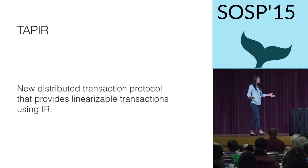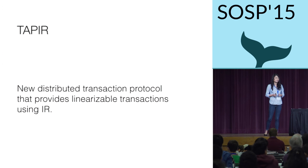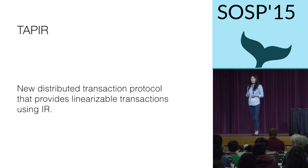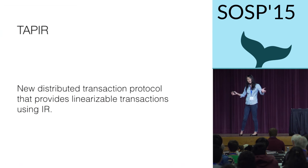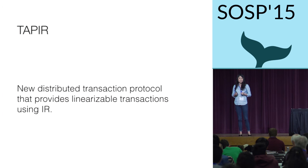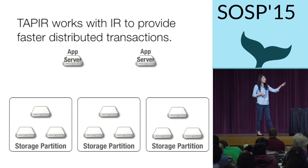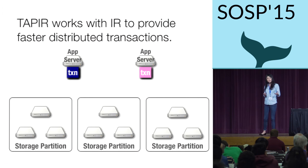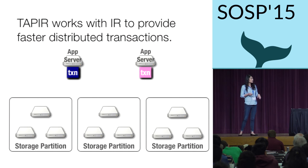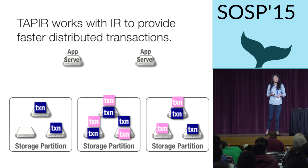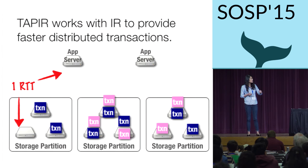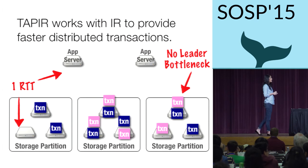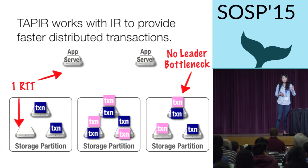TAPIR is a new coordination protocol designed explicitly to work with IR's unordered operations. It provides the same linearizable transaction ordering you get from strong transaction systems like Spanner. However, it's able to commit transactions in a single round trip. TAPIR uses two-phase commit across the partitions, and it relies on IR for fault tolerance within each partition. When an application submits a transaction, TAPIR replicates it within each partition using IR. Since IR doesn't have any ordering, transactions go directly to the replicas, allowing TAPIR to commit transactions in a single round trip and avoid the leader bottleneck.